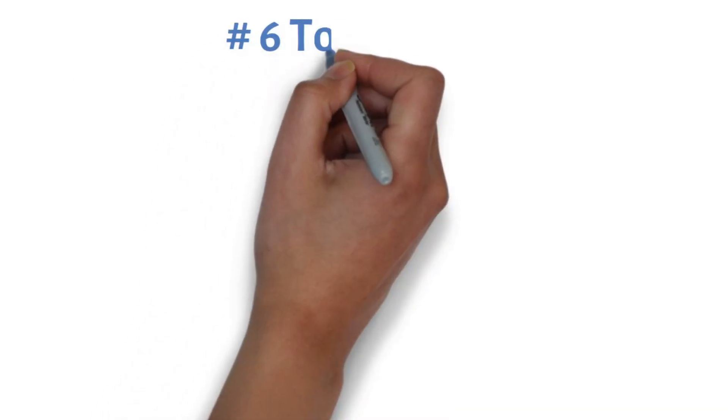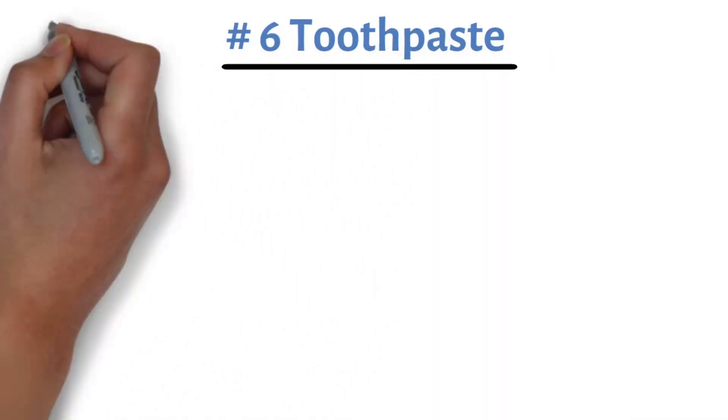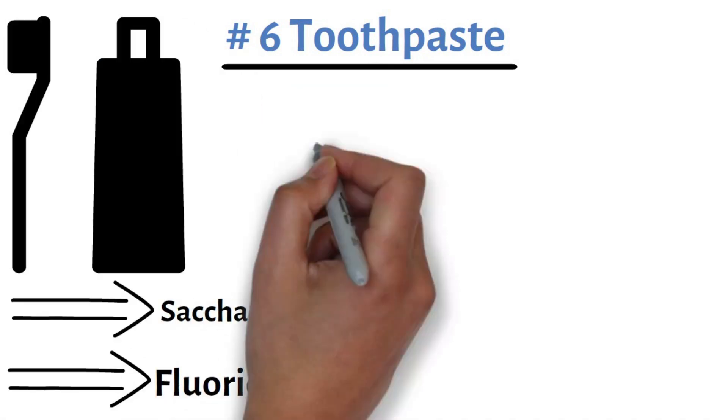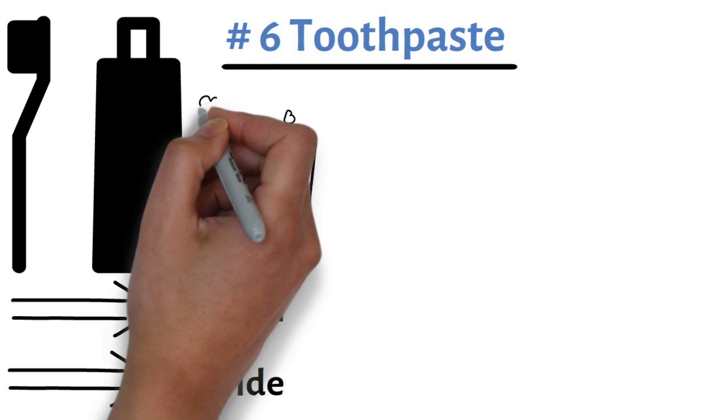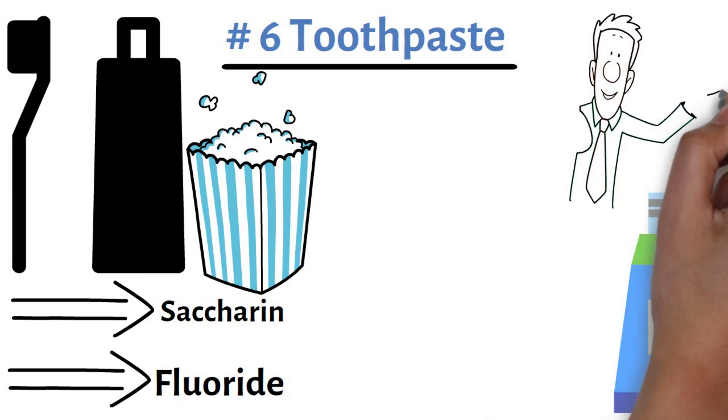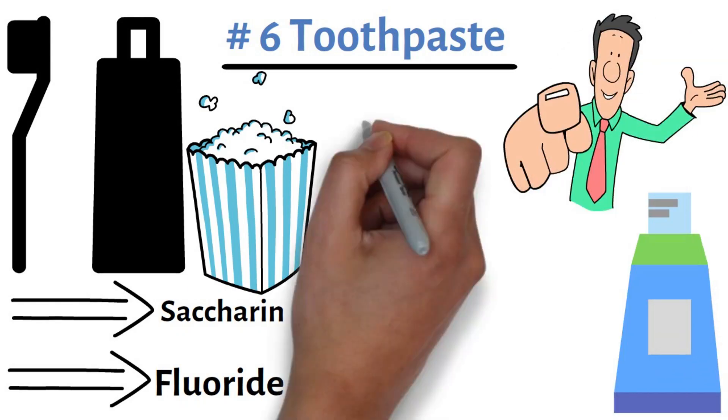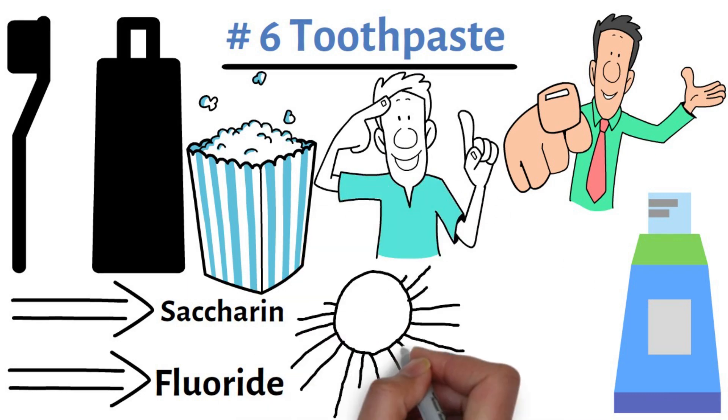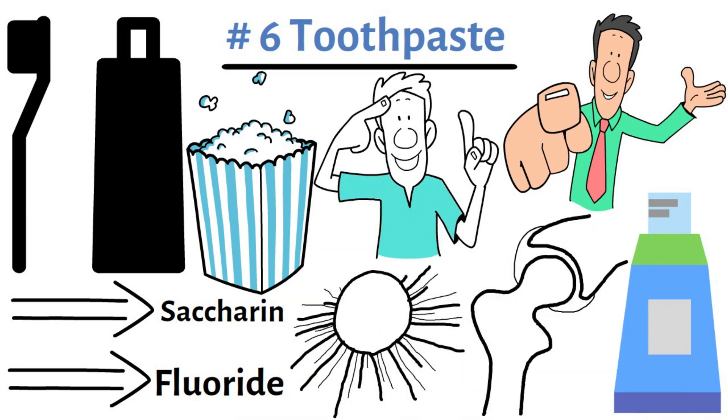Product number six, toothpaste. Toothpaste can contain carcinogenic ingredients like saccharin and fluoride. Saccharin is an artificial sweetener mentioned earlier, and fluoride, though common in dental products, can damage your thyroid and cause cavities. Long-term exposure to high levels of fluoride has been linked to various cancers, particularly bone cancer.